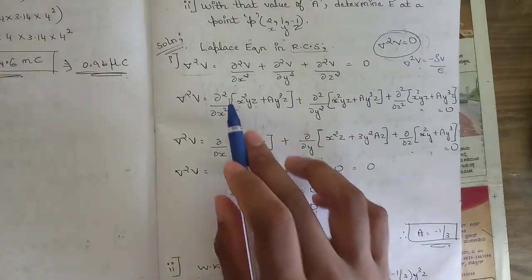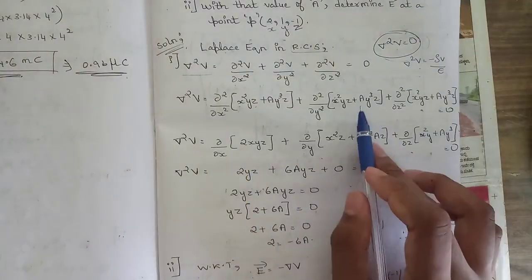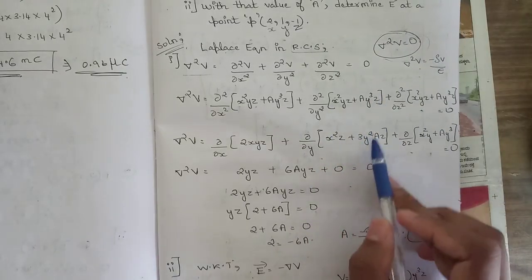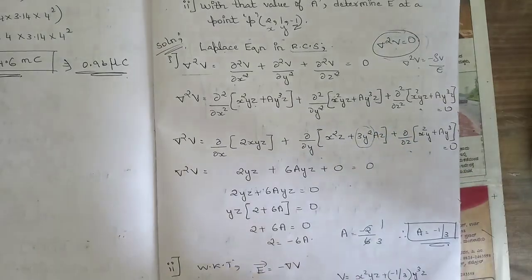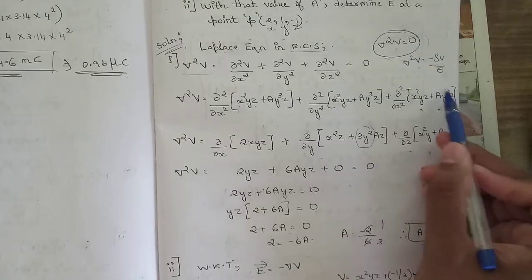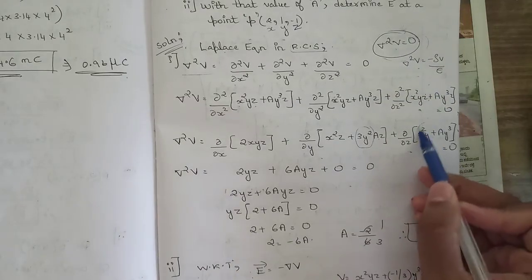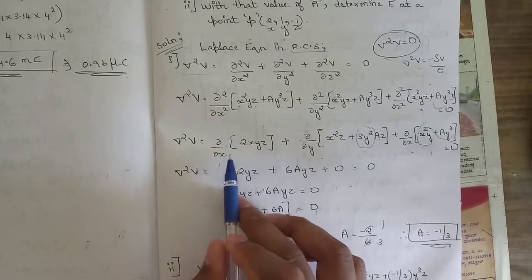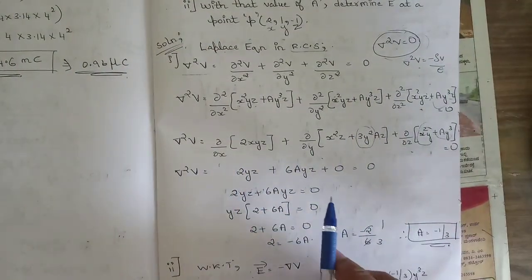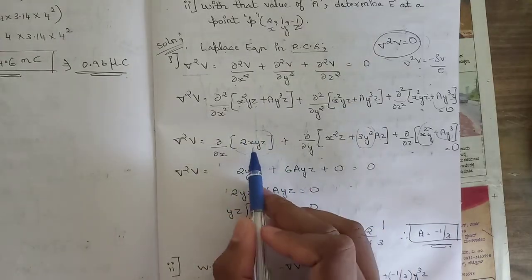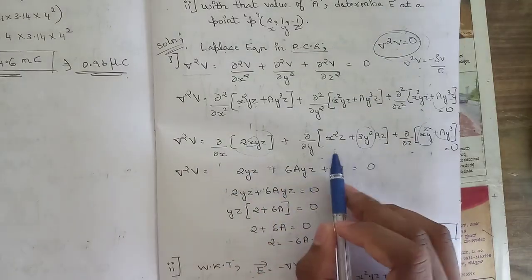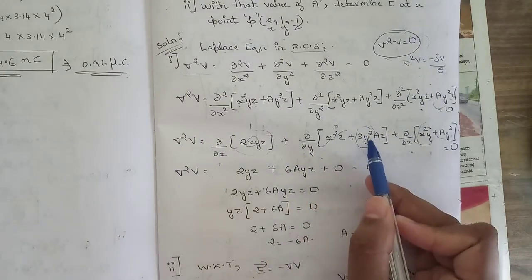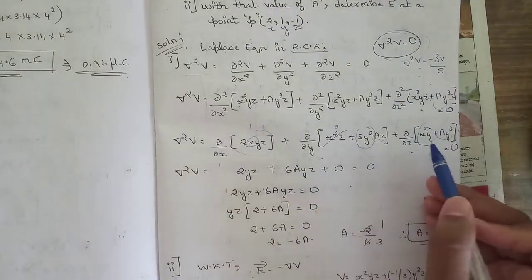Differentiating V once with respect to y gives x²z + 3ay²z. Differentiating V once with respect to z gives x²y + ay³. Now differentiating each result once more: ∂²V/∂x² = 2yz; ∂²V/∂y²: differentiating x²z + 3ay²z with respect to y gives 6ayz; ∂²V/∂z²: differentiating x²y + ay³ with respect to z gives 0, since neither term contains z.